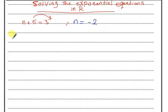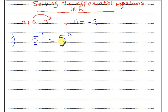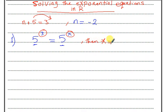Number 1: if we have 5 to the power 3 equal 5 to the power x, here I have the same base. So I will have the same power. If we have the same base, then we have the same power, so x equals 3.